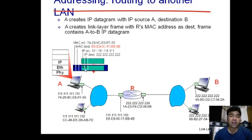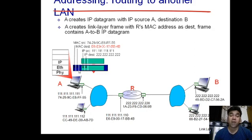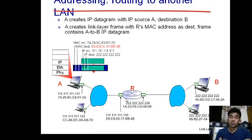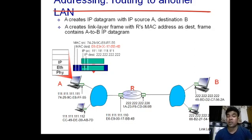At the data link layer, when the packet becomes a frame, the source and destination MAC addresses keep changing after crossing each node. The frame has source and destination MAC addresses: the source MAC address is this machine's MAC address, and the destination MAC address is the next hop. The data link layer is responsible for transferring a frame from the current node to the next node, and the MAC address is responsible for that.